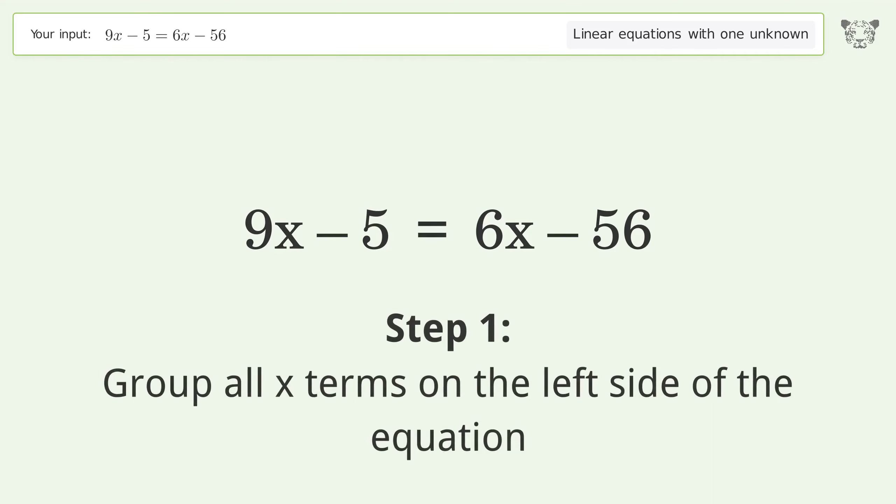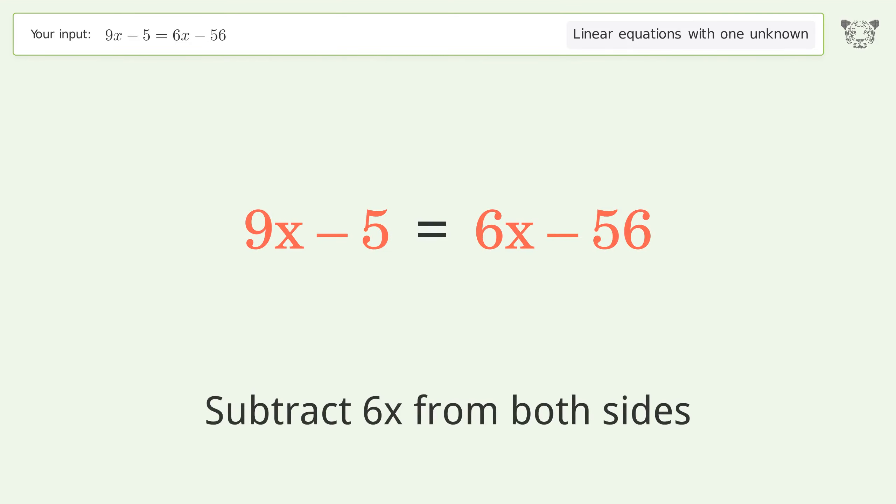Group all x terms on the left side of the equation. Subtract 6x from both sides.